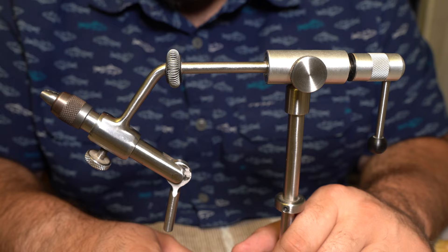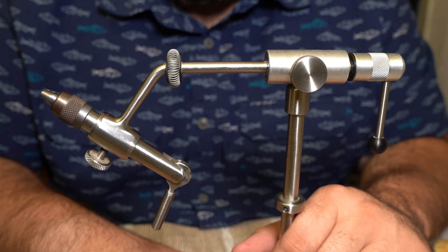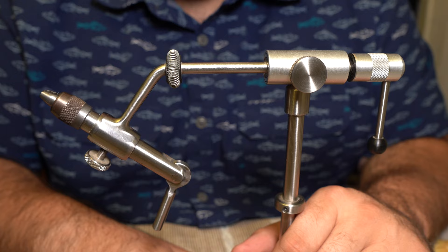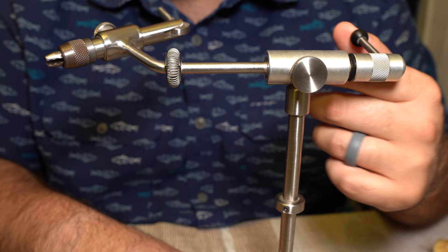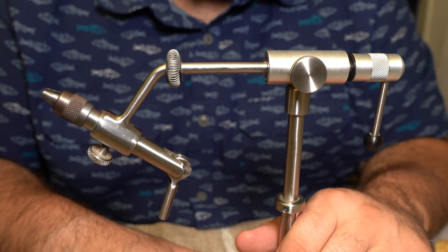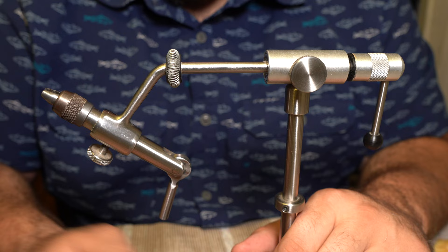So the only cons I can really think about with this thing are it's large. And if that's a problem, this is not the vise for you. If you want something that's rock solid, that will crush down on just about any hook size you could possibly ever need and has full rotation, this is a great vise. When you get into $200, $300 and higher, you only got so many options.